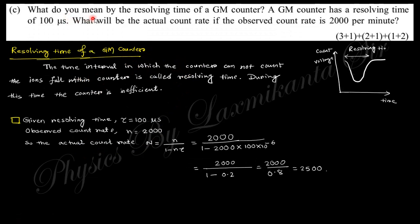The next question asks: what do you mean by the resolving time of a GM counter? The resolving time is the time during which the counter cannot accurately count the ions or particles falling within the counter. During this time the counter is inefficient — it cannot measure the accurate ion count.